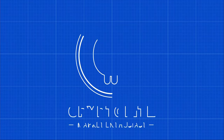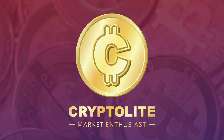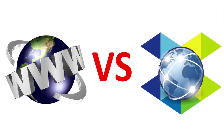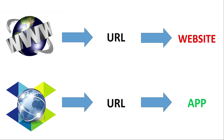As written in the white paper, Elastos aims to create a new kind of internet powered by blockchain. The new internet will be called the Elastos Smart Web or the Internet of Wealth. The main difference from the current internet is that the current internet is a web of information — if you click on a URL, it directs you to a website. The Elastos Smart Web will be a web of apps, so when you click on a URL, instead of going to a website, you will go to an app.